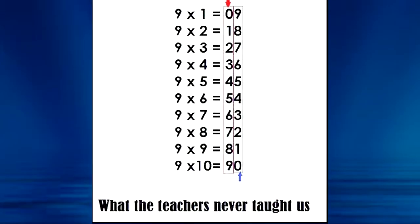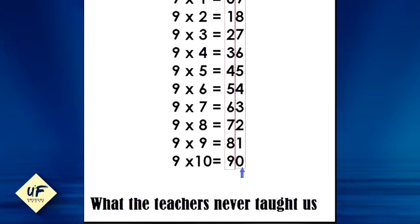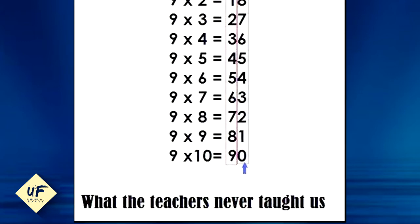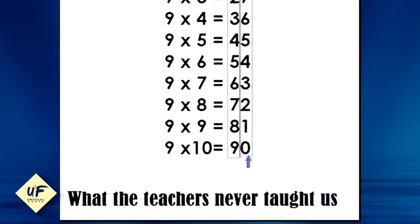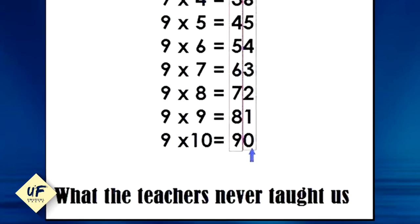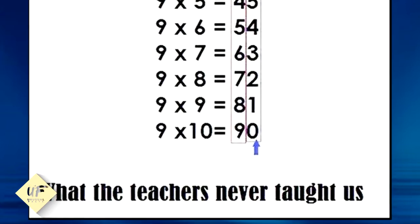You can easily remember multiples of 9. 9 times 1 is 9, 9 times 2 is 18, 9 times 3 is 27. Do you see the pattern here? 0, 1, 2, 3, 4, 5, 6, 7, 8, 9, and 9, 8, 7, 6, 5, 4, 3, 2, 1, 0.